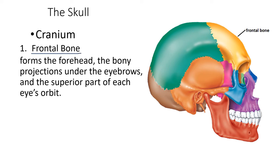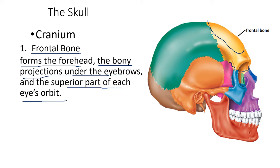The frontal bone forms the forehead, the bony projections under the eyebrow, and the superior part of the eye orbit. The frontal bone is part of the cranium, not part of the facial bone. So the skull extends to include this portion — it is part of the cranium, not part of the facial bone.